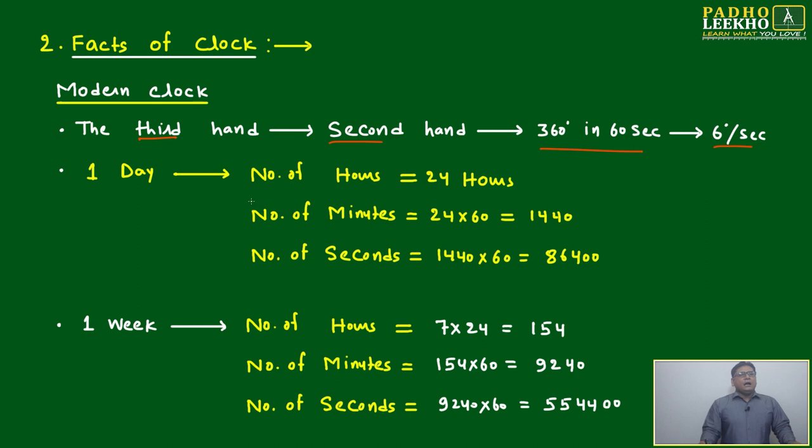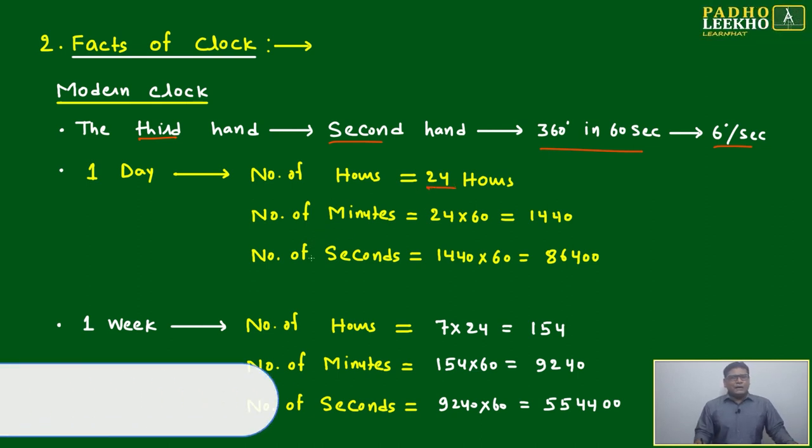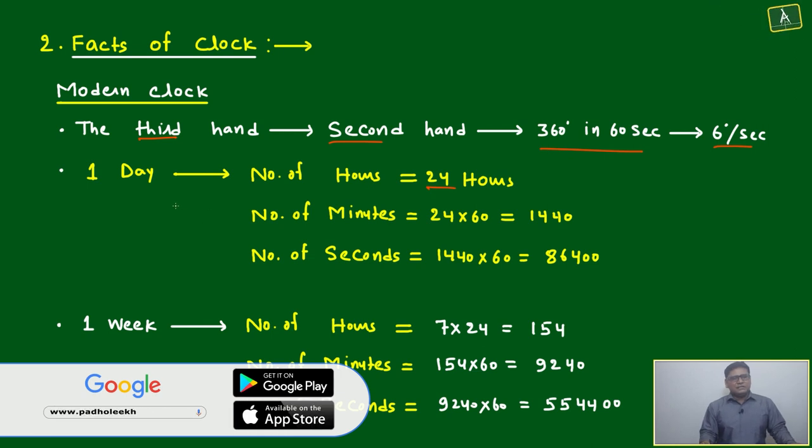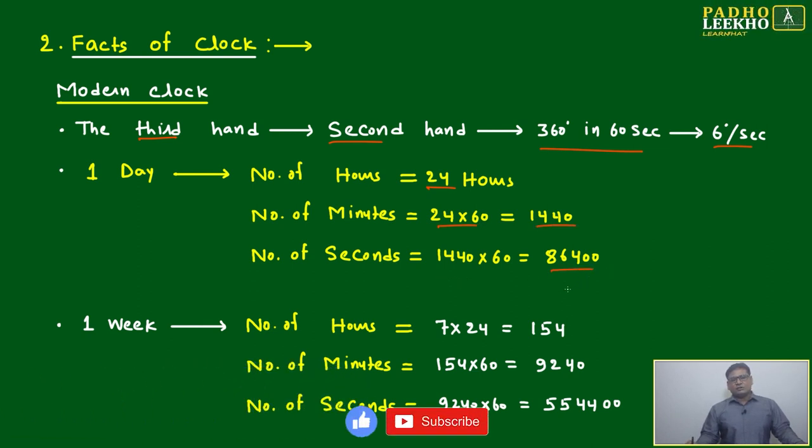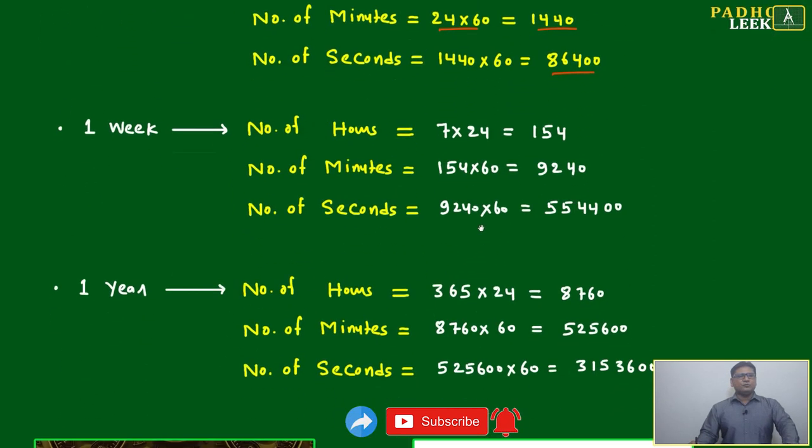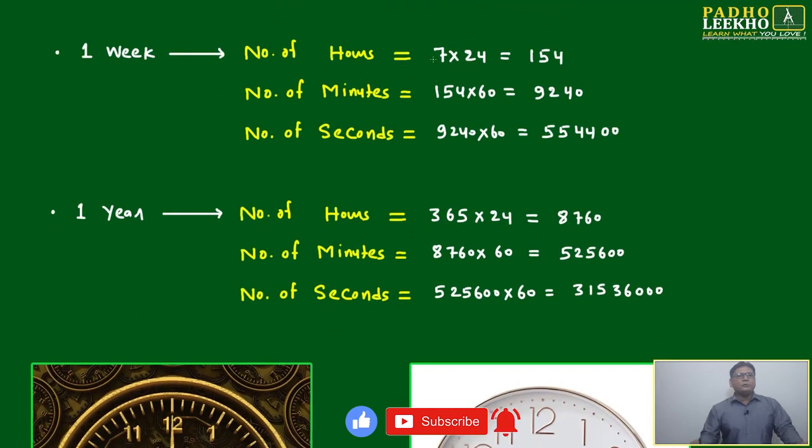Now, just go through the basic data, try to keep in mind. Otherwise you can convert whenever required. One day: number of hours is 24, number of minutes 24×60 = 1440, number of seconds 86,400. One week: number of hours 7×24 = 154.